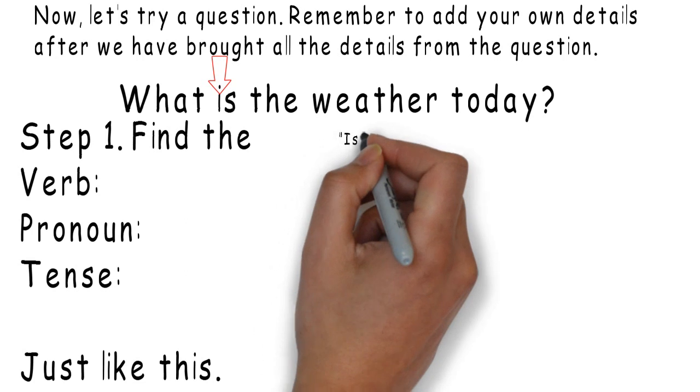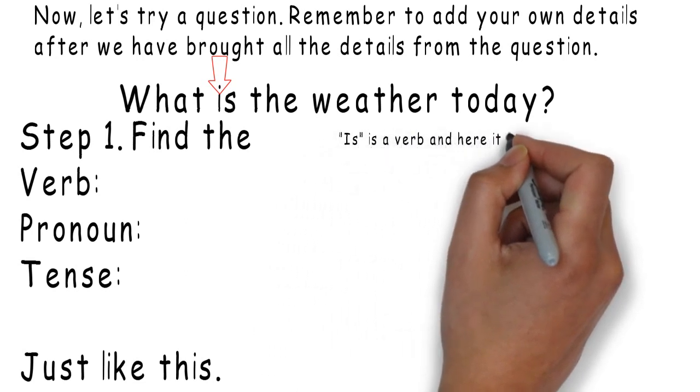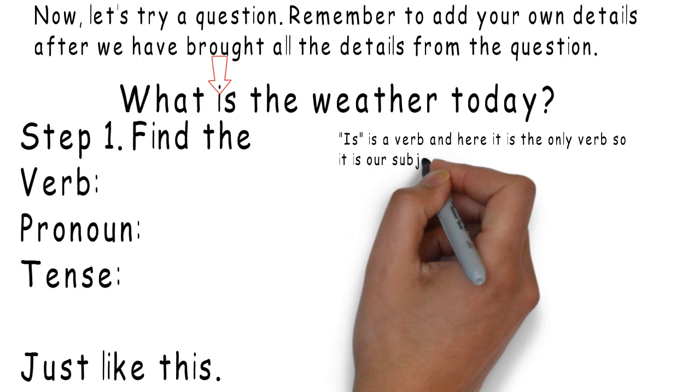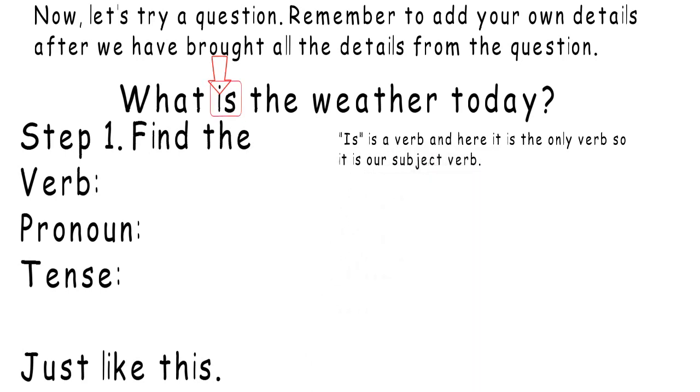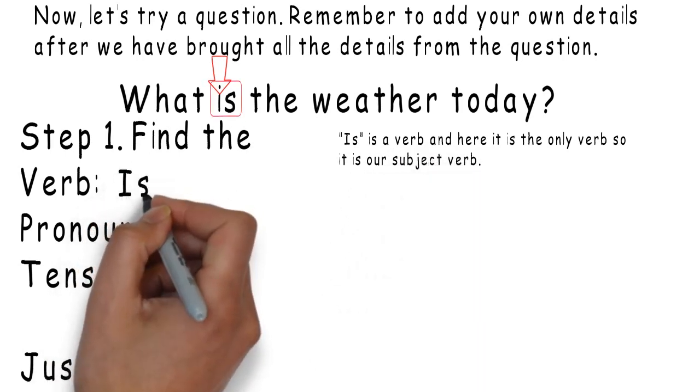Is. Is is a verb and here it is the only verb. So, it is our subject verb. Our verb is – is.